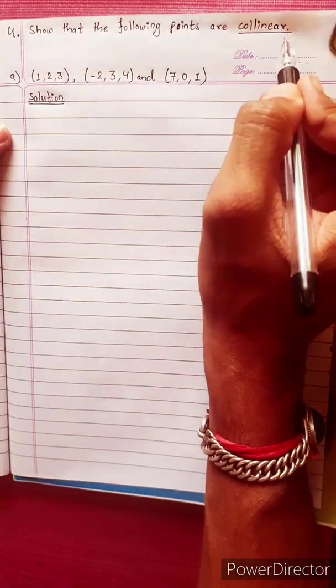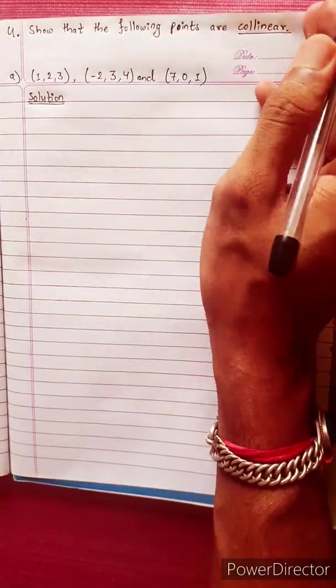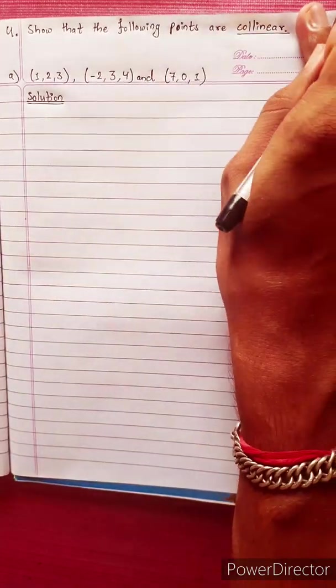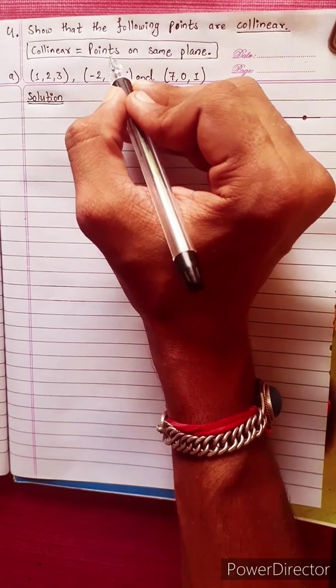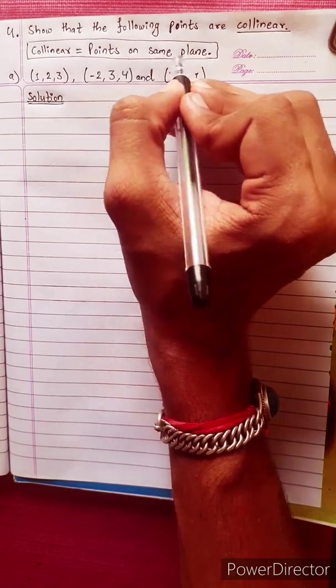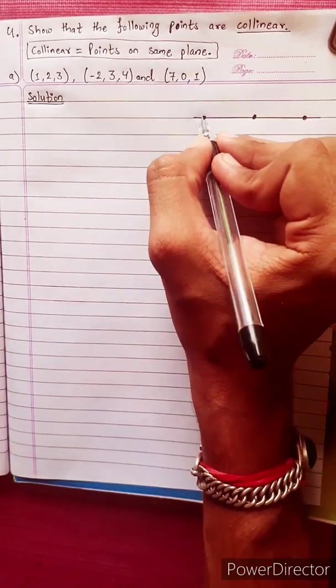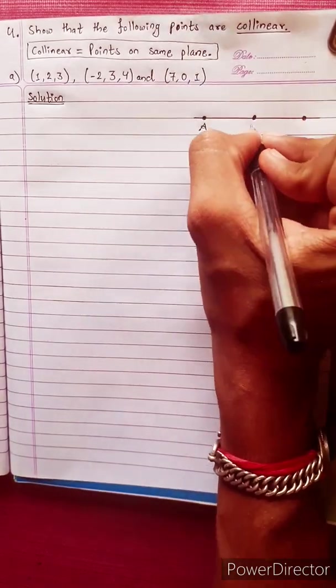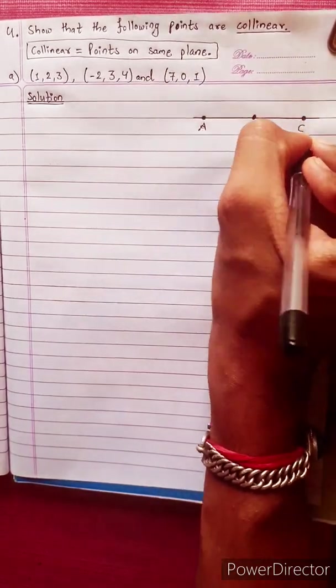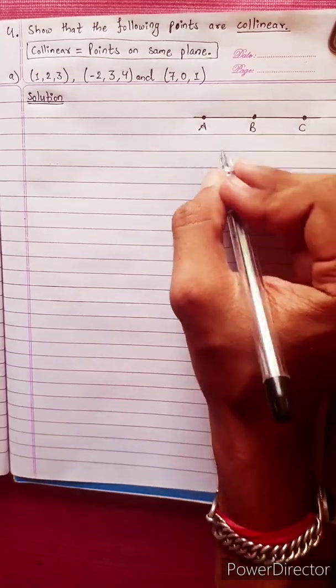I will show you the following points, which are collinear. What is it? It's the points which lie on the same plane. Suppose you have a plane. You have points A, B, C. It's collinear.